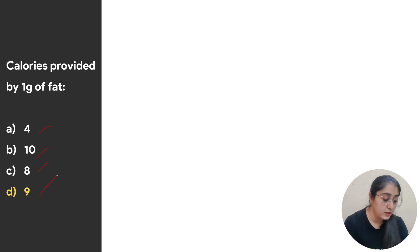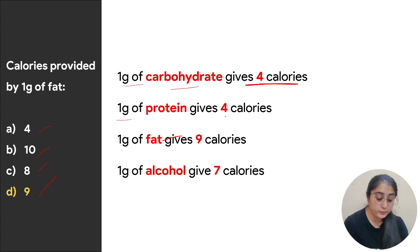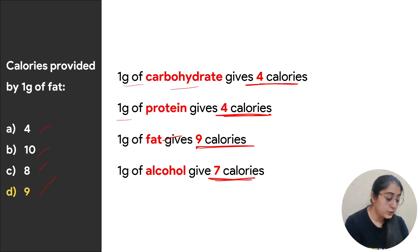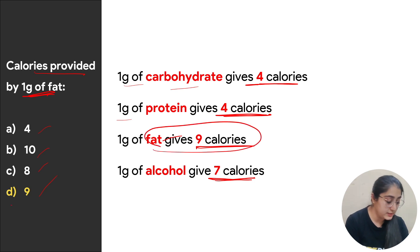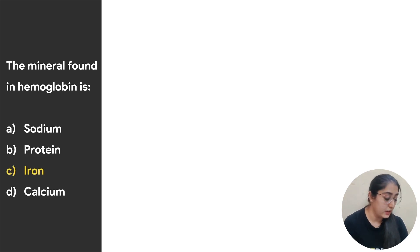Next: calories provided by 1 gram of fat — options are 4, 10, 8, or 9. One gram of carbohydrate provides 4 calories, 1 gram of protein provides 4 calories, 1 gram of fat provides 9 calories, and 1 gram of alcohol provides 7 calories. The correct answer is 9 calories.